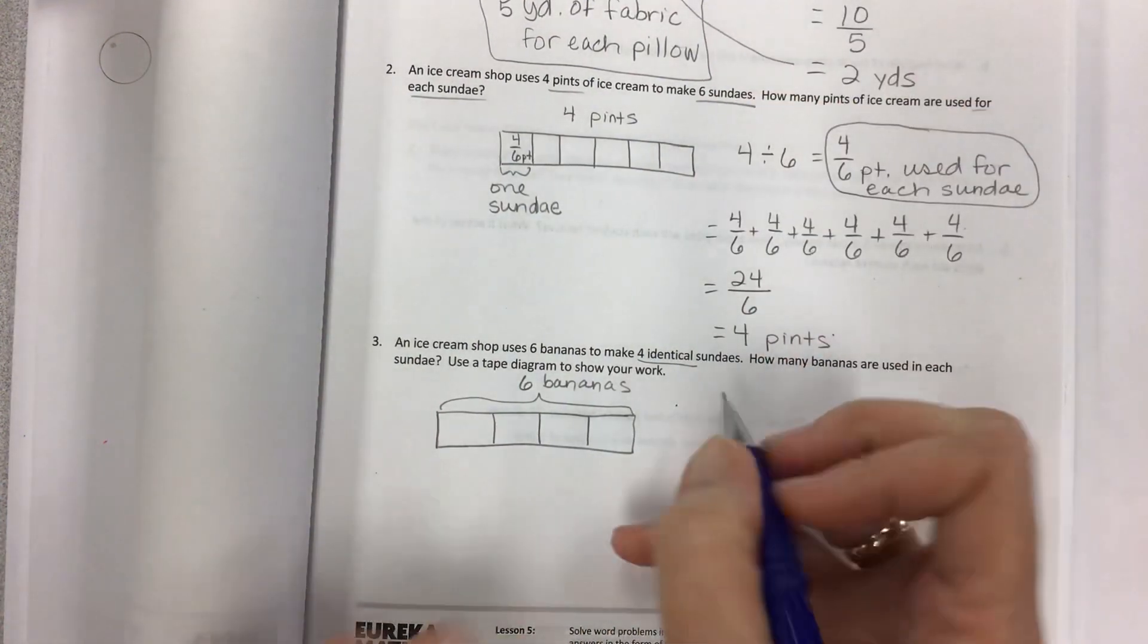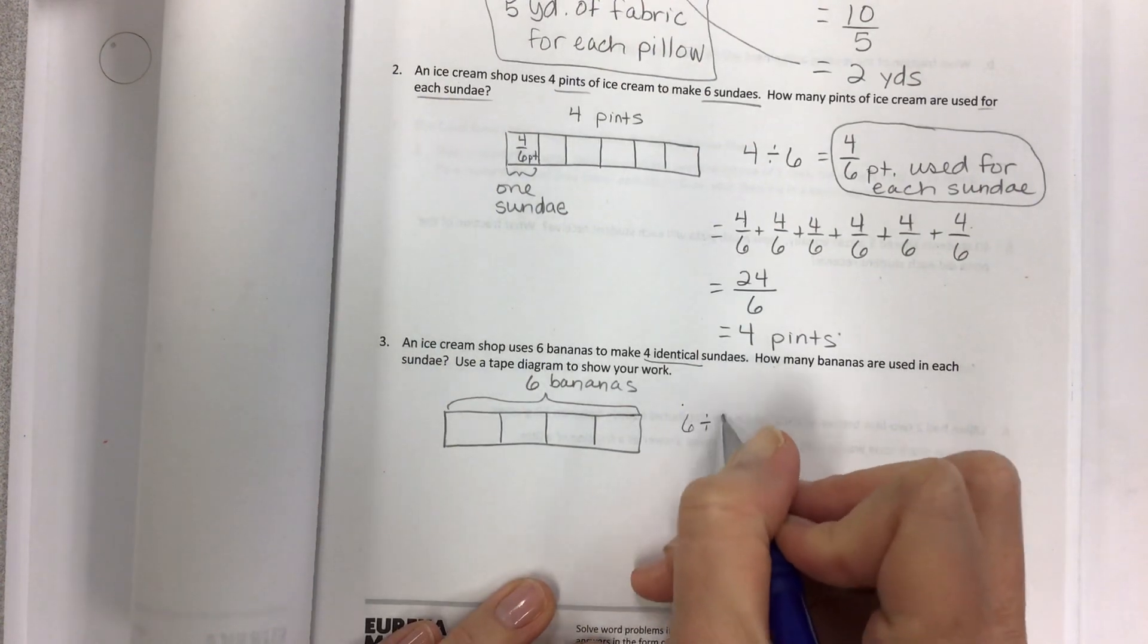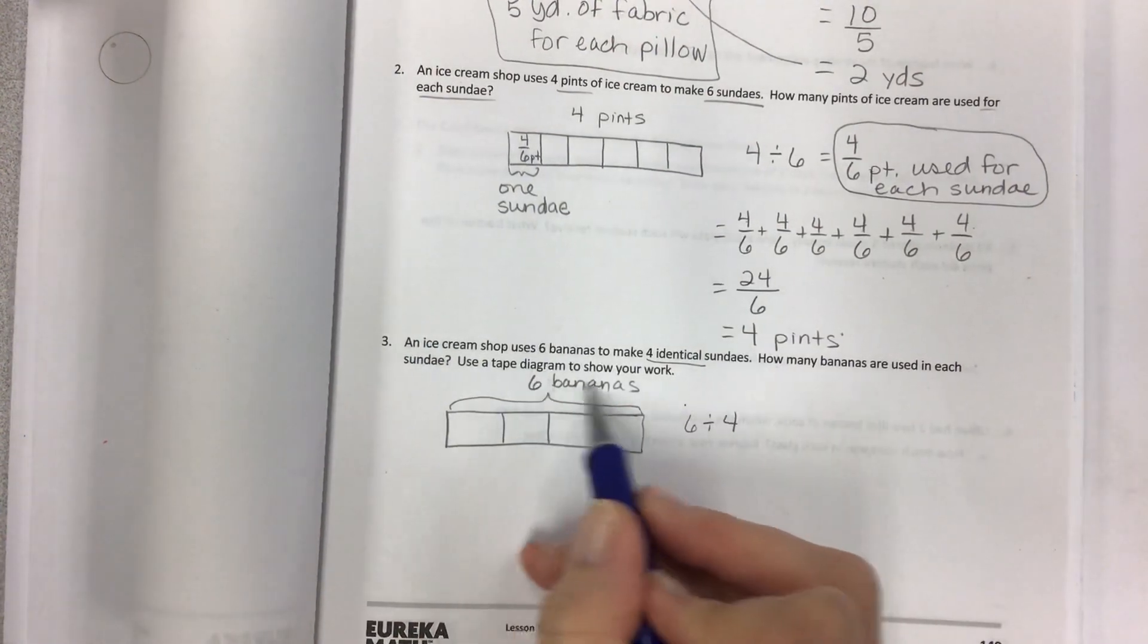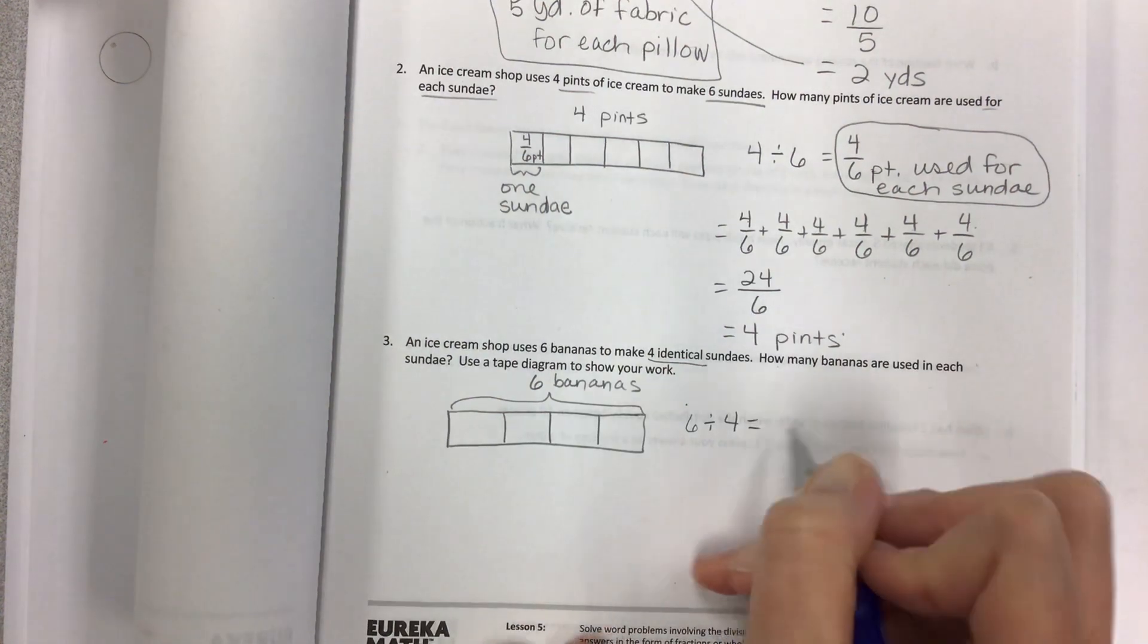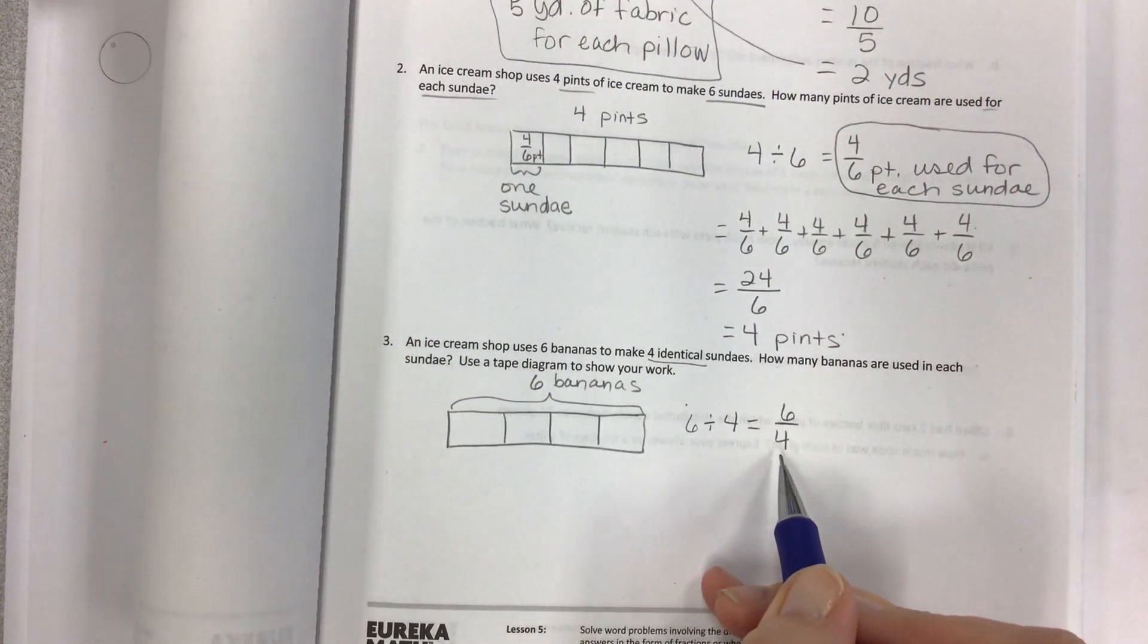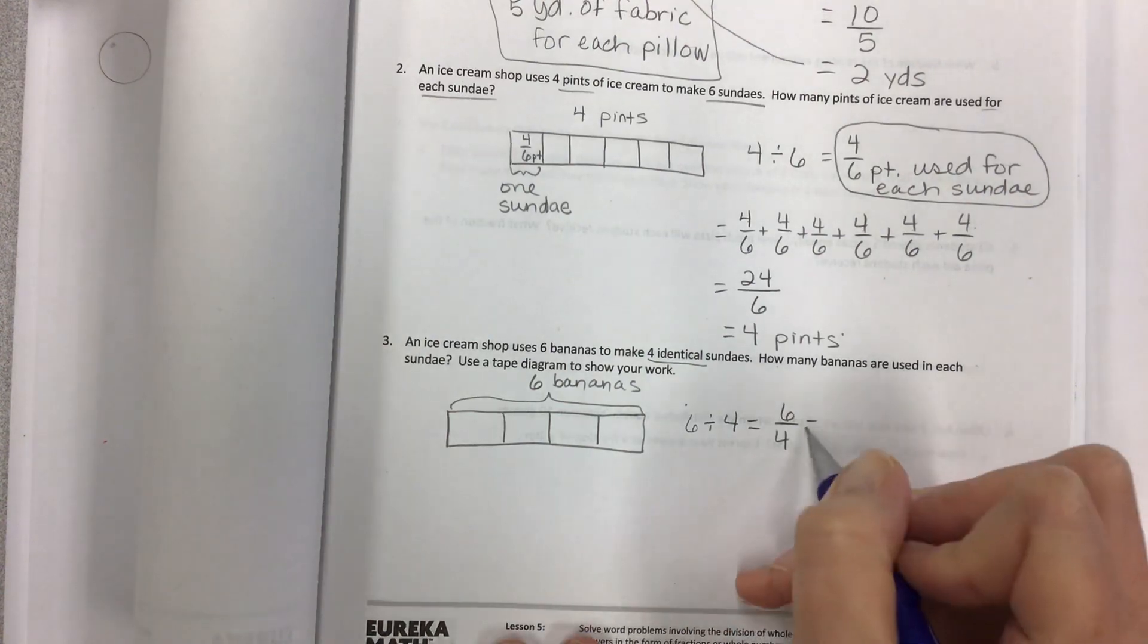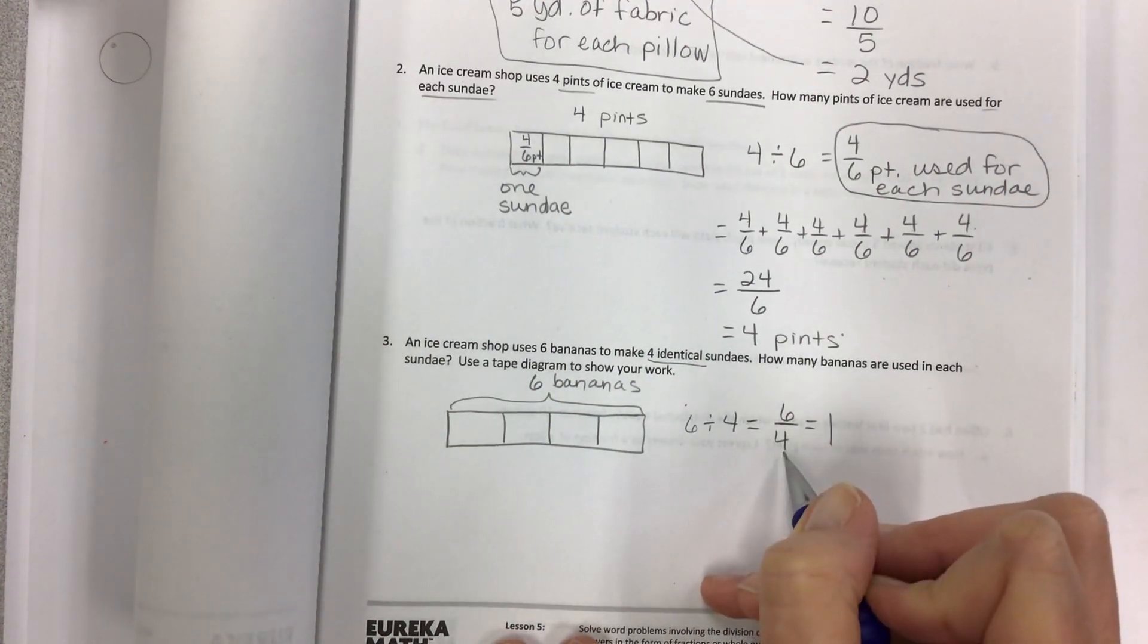So now what? Instead of this one, I have six that's being divided by four. This is my whole. This whole always goes first. Which means my fraction looks like this.